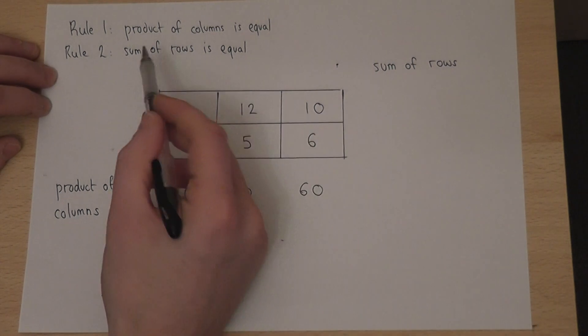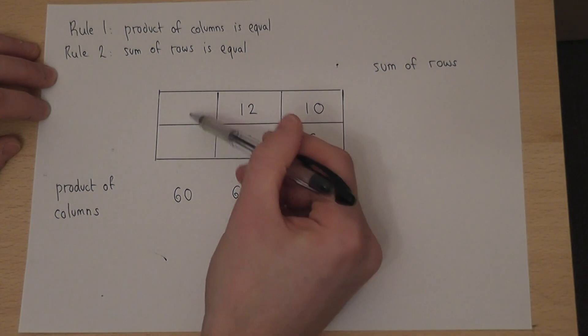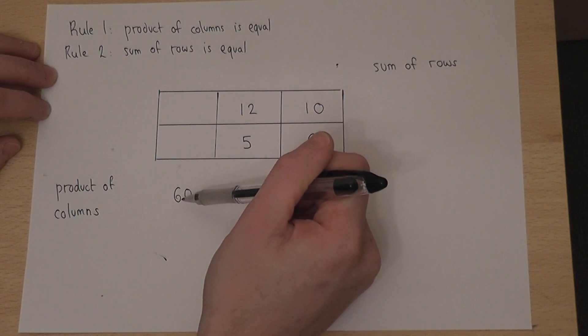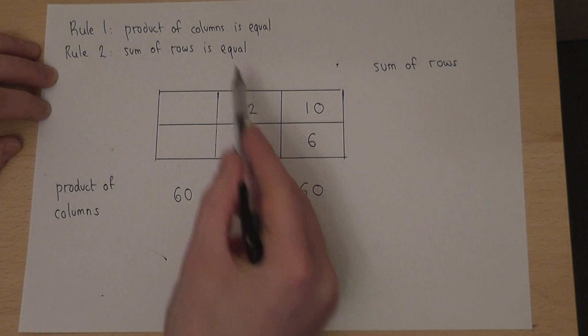But we're also told that the sum of the rows is also equal. So I must find two numbers which times to make 60, such that the sum of that and the sum of that is equal.